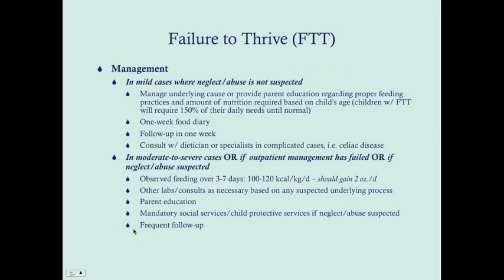Management is going to differ based on severity or whether neglect or abuse is suspected. For mild failure to thrive, you're going to manage the underlying cause or provide parental education regarding proper feeding practices and the amount of nutrition required based on the child's age. Children with failure to thrive will require 150% of their daily needs until they've caught up to normal, which is typically their birth percentile or roughly the 50th percentile. You want these parents to do a one-week food diary — writing down how much the child ate, when they ate it, and any issues with feeding or vomiting. You'll follow up again in one week.